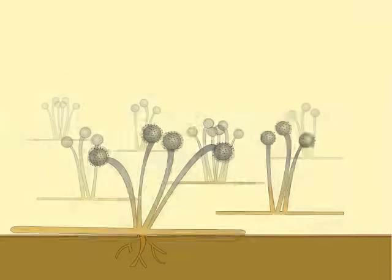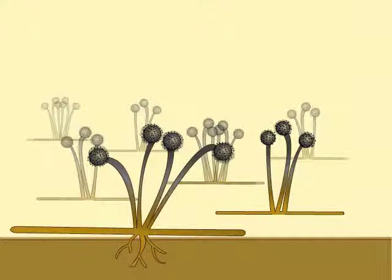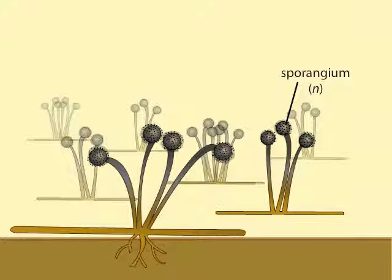The black speckles that Rhizopus produces on bread are capsules called sporangia that the fungus produces through asexual reproduction. The fungus consists of a network of filaments called hyphae that penetrate the bread and absorb nutrients.